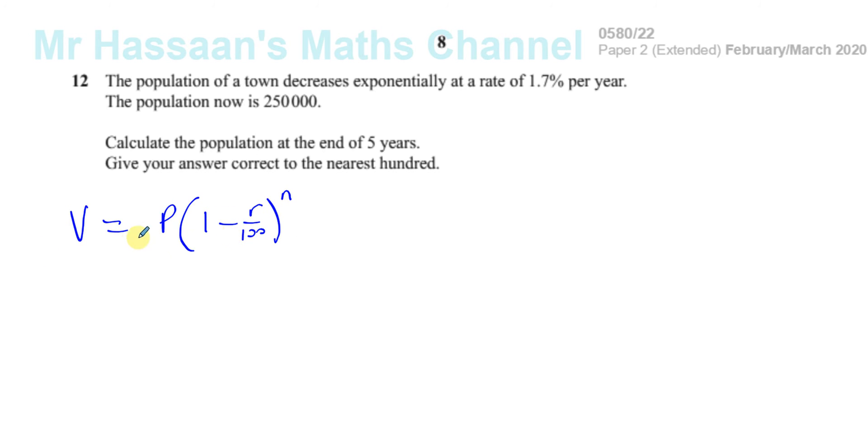So that's a formula which is kind of like based on the compound interest formula, this is a decrease. That's perfectly fine to use. You can say V equals 250,000 times 1 minus 1.7 over 100 to the power of 5, because it's 5 years, and that will give you your answer.